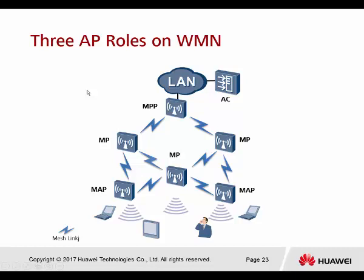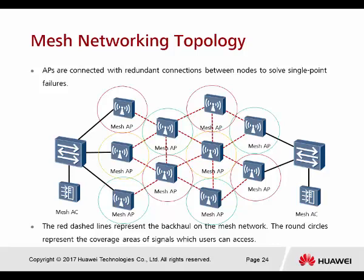For WMN, they have three AP roles. For WDS we only had three names — root, middle, and leaf. For the WMN, the first role is MPP — the mesh portal point — which is what we call the root AP, the main AP connected to the uplink. The APs located in the middle are called MP — the mesh point — whose main function is to transmit the signal and connect to all the MAPs. MAP is the mesh access point, which provides wireless access for all the end users while also connected to MP. The APs are connected with redundant connections between nodes to solve single point failure.